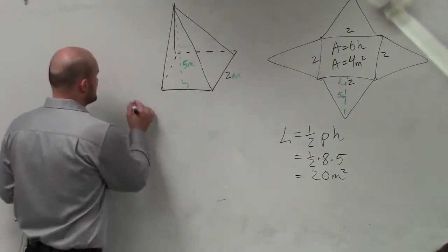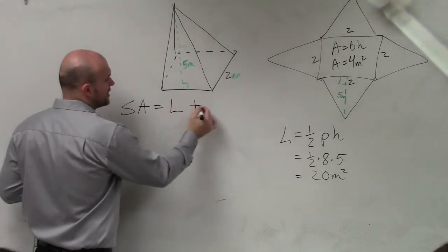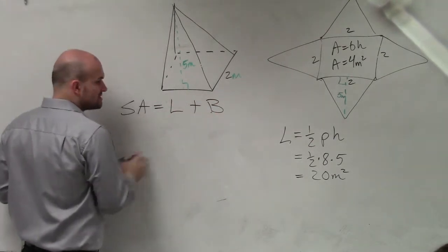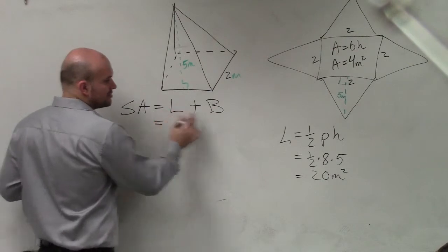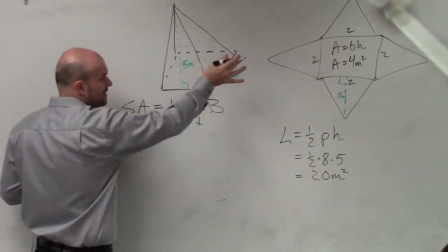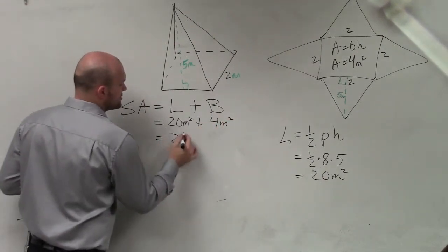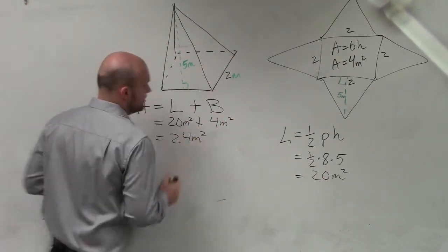Now remember, to find the surface area, all I'm simply doing is adding up the lateral area plus the base. So my lateral surface area is 20 meters squared, plus my area of my base, which is 4 meters squared. So therefore, this is 24 meters squared.